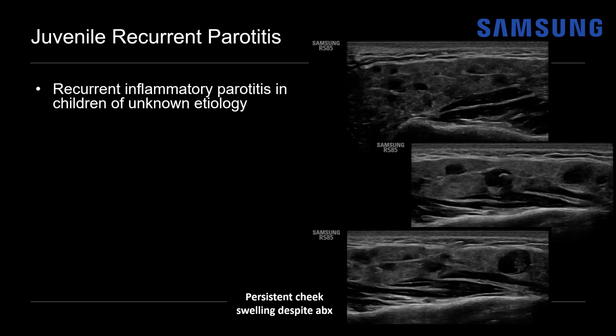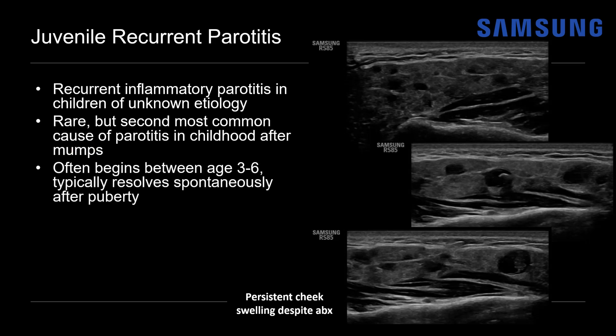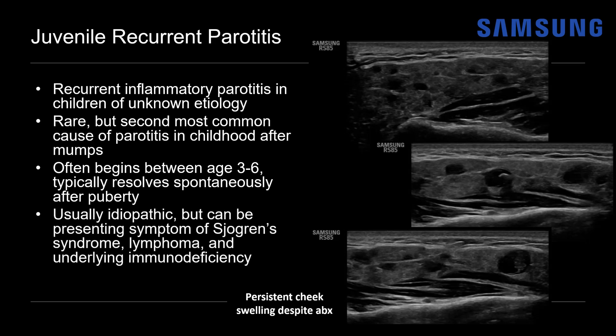Juvenile recurrent parotiditis is a recurrent inflammatory parotiditis that occurs in children of unknown etiology. It's rare, but it's actually the second most common cause of parotiditis in childhood after mumps. It often begins between the ages of three and six with episodes of intermittent inflammation, but then typically resolves spontaneously after puberty. It's usually idiopathic, but it can be a presenting symptom of Sjogren's syndrome, lymphoma, and underlying immunodeficiency such as HIV — so it's important to screen patients for these diseases.